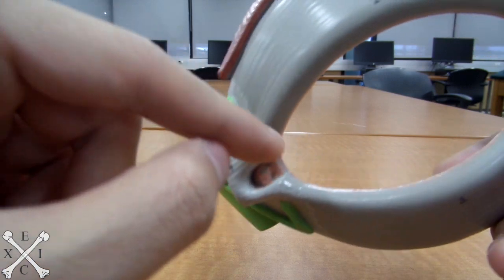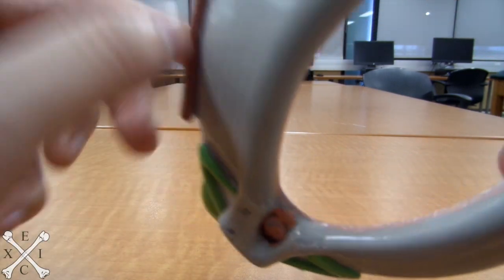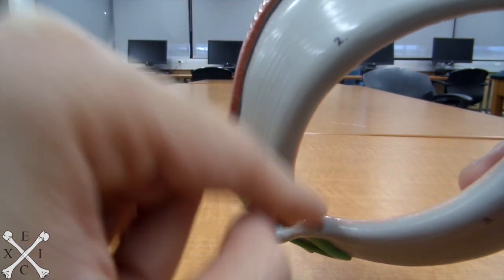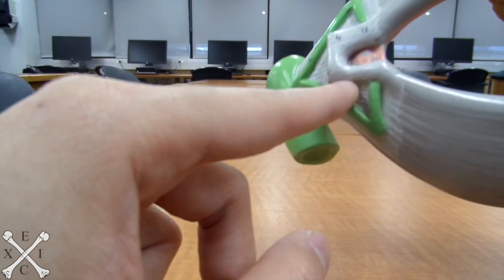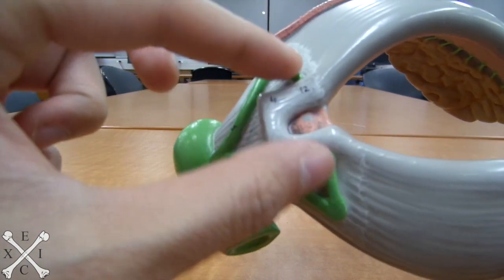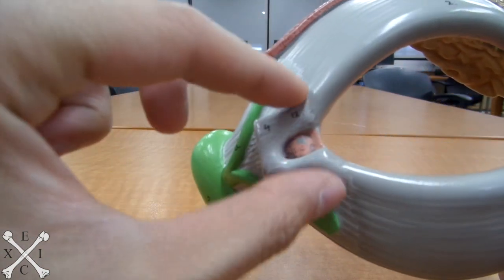The punctum is a hole that is not really visible on this model, but it would be in here. Your teardrops would go into that and enter this structure called the lacrimal canaliculus, which is this part right here, the triangle.